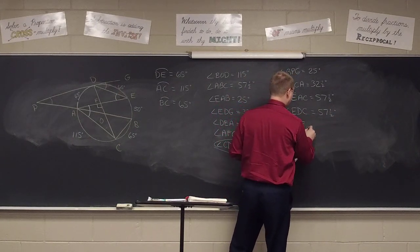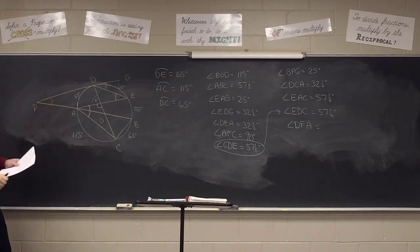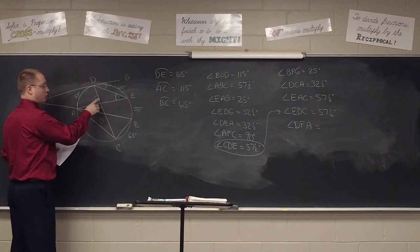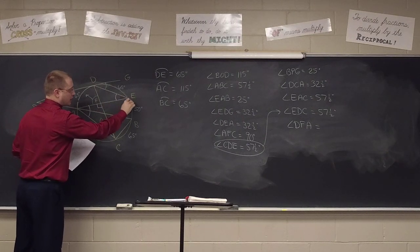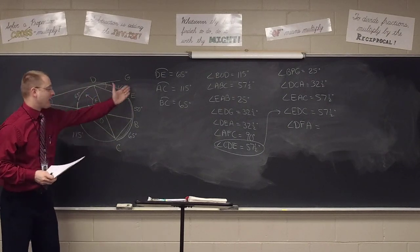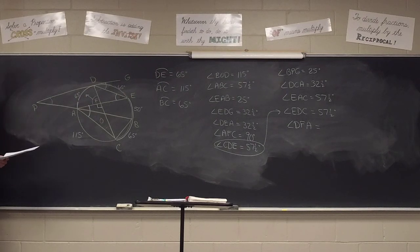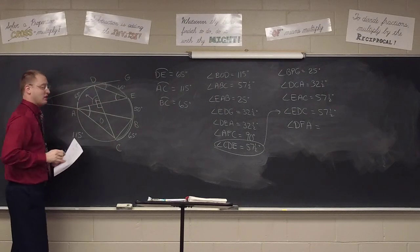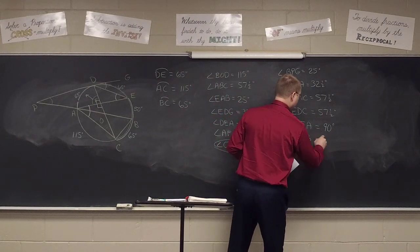Angle DFA — so this angle here, formed inside the circle, which means it's going to be half the sum. Its own arc is 65 and the vertical angle's arc is 115. So not 65 and 50, but 65 and 115 — add it up, half that sum ends up giving us 90. And that makes sense because the lines are perpendicular. Angle COB — central angle, 64 degrees, just equal to its arc.